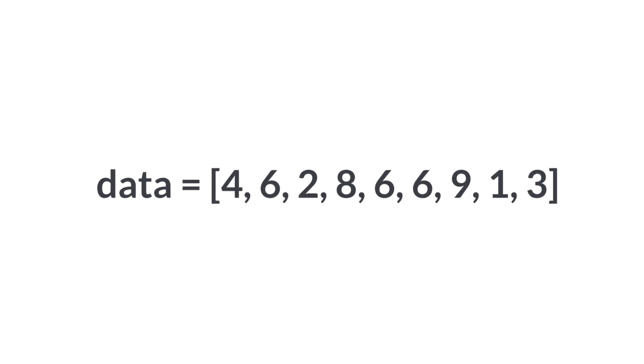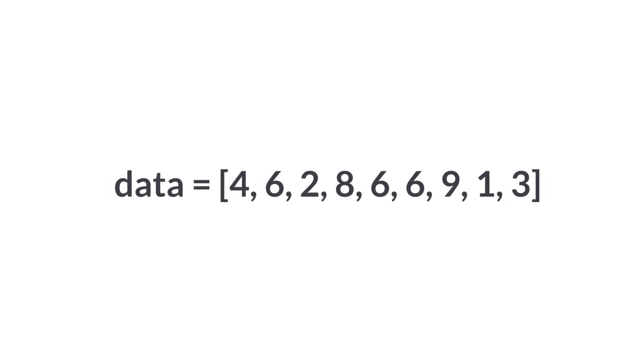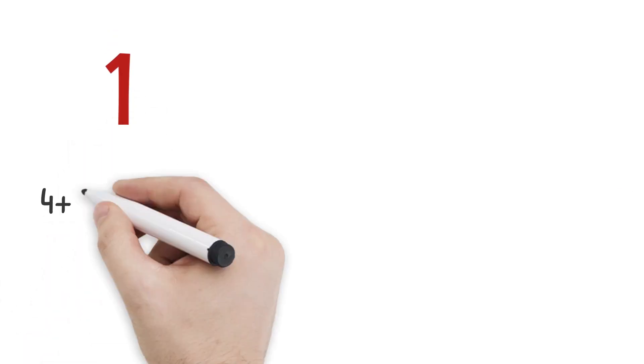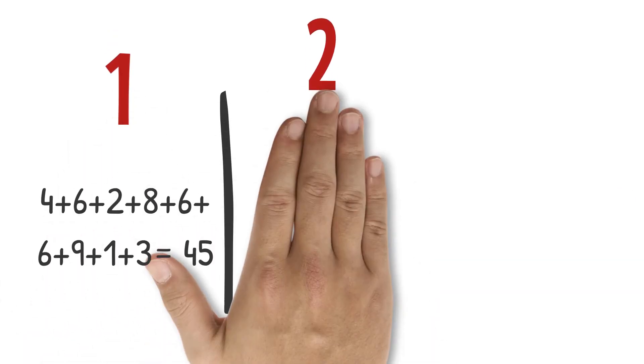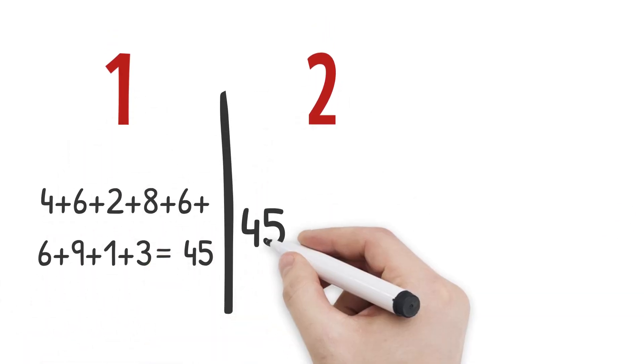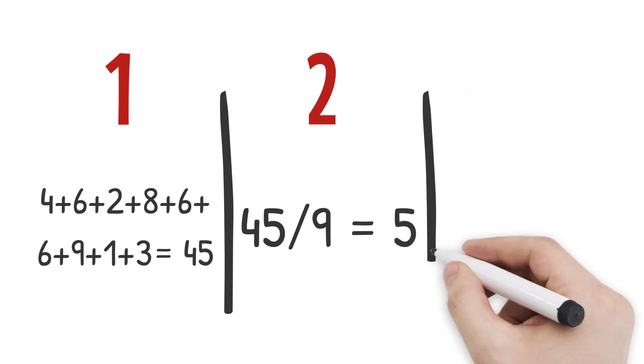Imagine that we want to calculate the average of a dataset with the following nine observations. Step 1: calculate the total. Step 2: divide the total by the number of observations.